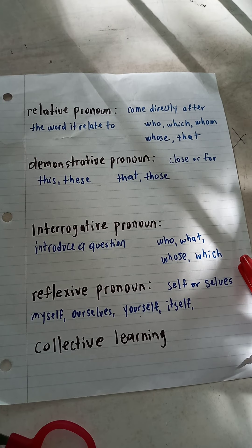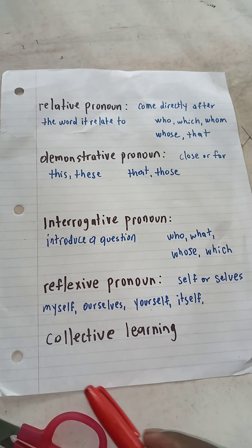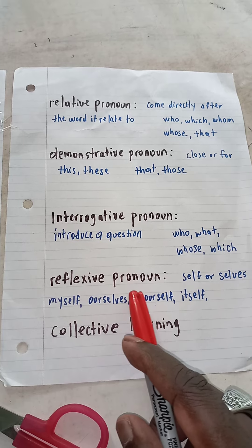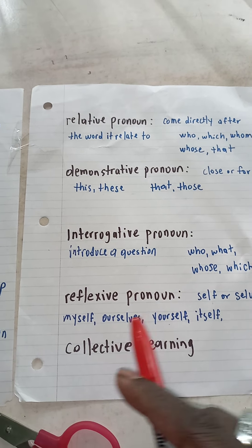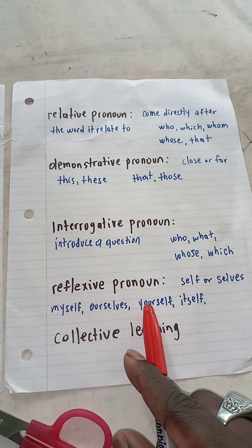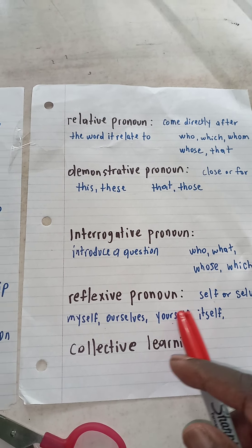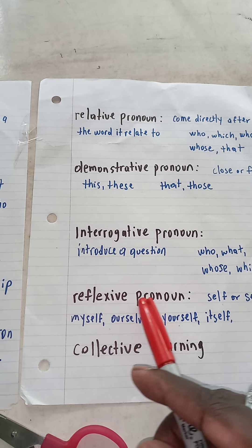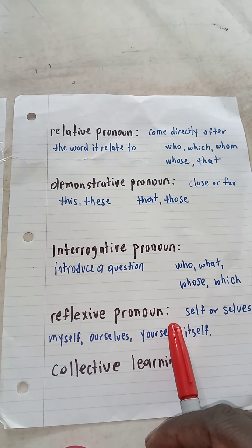Then you have interrogative pronouns, which introduce a question — what, who, whose, and which. Those are interrogative pronouns. And then you have reflexive pronouns — they speak about yourself, like myself, ourselves, yourself, and itself. The reflexive pronoun refers to those.